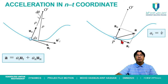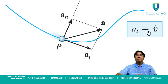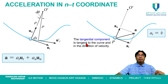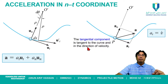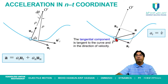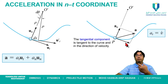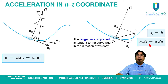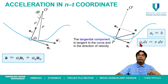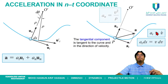The tangential component AT is in the same direction as velocity — tangent to the curve — and equals dV/dt (V-dot). The tangential component of acceleration is tangent to the curve and in the direction of velocity. From the basic kinematic equation, At·ds = V·dV can be used to calculate the tangential component only.